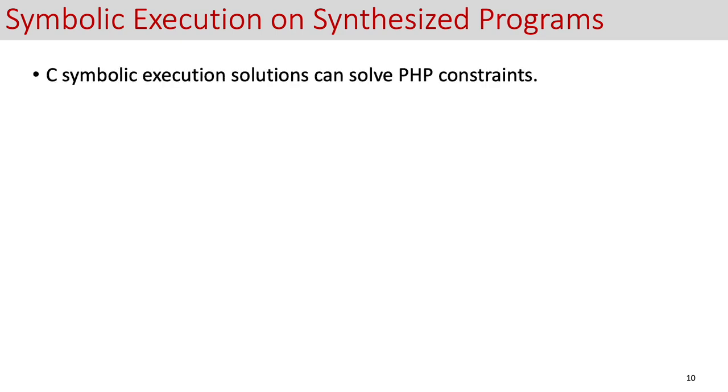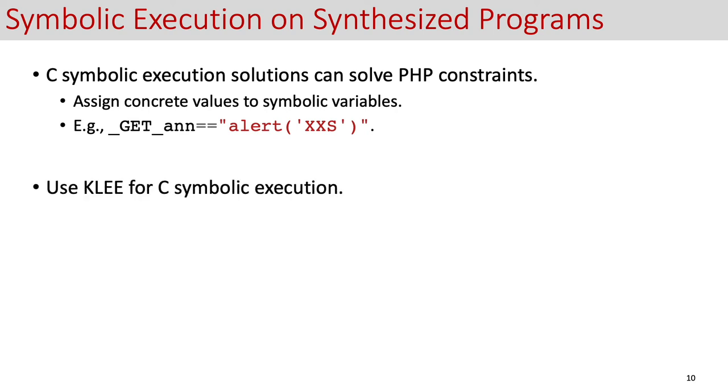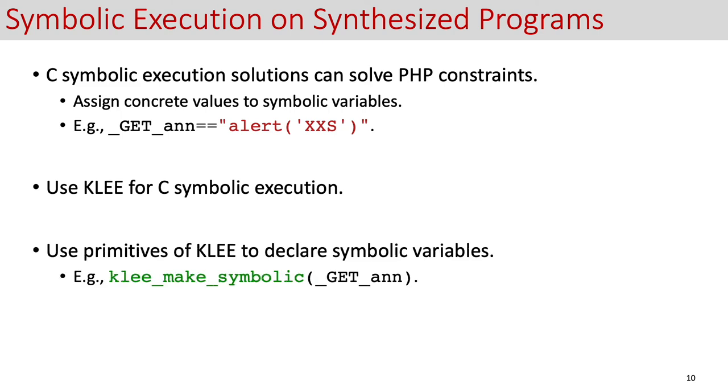Last, we employ a C symbolic execution to solve the synthesized C program. In particular, the C symbolic execution can assign concrete values to the symbolic data, like we can get a specific value to the server developers. In our setting, we use Klee for our C symbolic execution, and we also use Klee's primitives to declare the certain symbolic variables. We modify Klee to ignore certain unnecessary error reports during the symbolic execution and to focus more on our checkpoints.